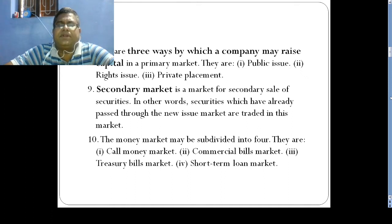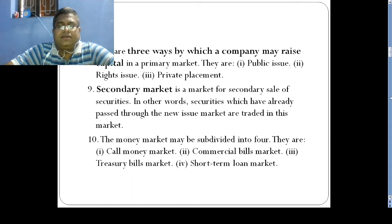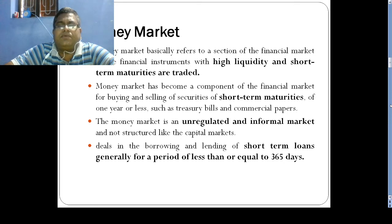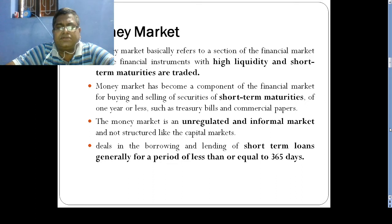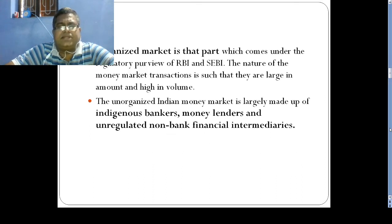The Secondary Market is a market for the sale of securities, also called the stock exchange market where securities are traded. The Money Market is divided into different components: the Call Money Market, Commercial Bill Market, Treasury Bill Market, and Short-Term Loan Market. The Money Market is a high-liquidity, short-term market dealing in securities with maturity within one year or equal to 365 days.